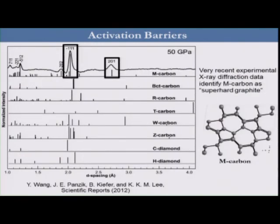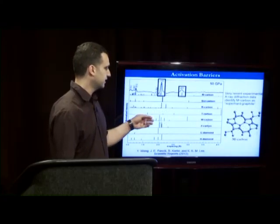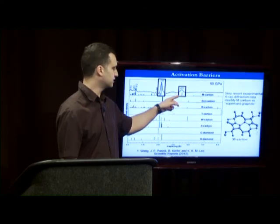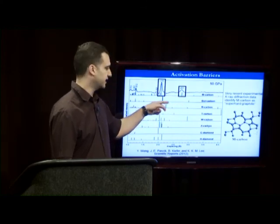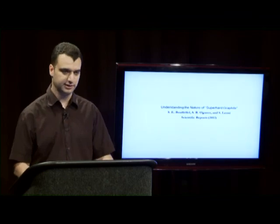Very recently, a group of scientists tried to repeat the experiment and obtain high-quality X-ray diffraction data, comparing it with the different proposed polymorphs for super-hard graphite. You can see that only M-Carbon — especially for these two peaks — can match the experiment. For more detailed information about this work, please refer to our paper published in Scientific Reports, entitled 'Understanding the Nature of Super-hard Graphite.' Thank you for your attention.